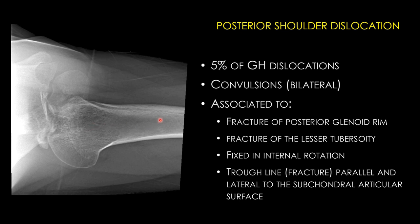Posterior dislocation is usually related to a direct blow — most commonly from seizures, where the patient is fixed in internal rotation and strikes the floor or an object with great force, driving the proximal humerus posteriorly.